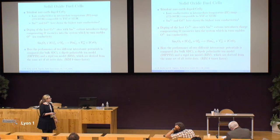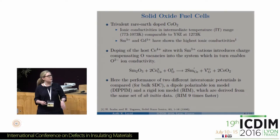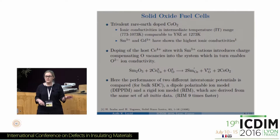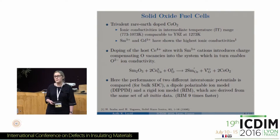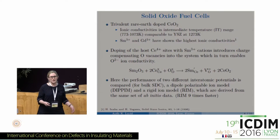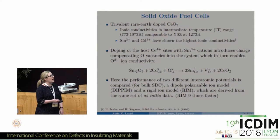The talk is broken into two parts. The first part covers the performance of two different interatomic potentials tested to model ionic conductivity in samarium and gadolinium doped ceria: a dipole polarisable ion model, which accounts for polarisability by induced dipoles from changes in the electric field, and a classical rigid ion model based on the same form. The rigid ion model is nine times faster computationally, and both potentials were derived from the same ab initio data.